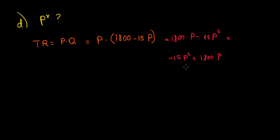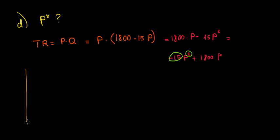The reason I suggest we write it as −15P² + 1800P is to see that we have a quadratic equation, meaning that on a graph it would look like a parabola. If we write total revenue as a function of price, a parabola with a negative coefficient would look something like this.